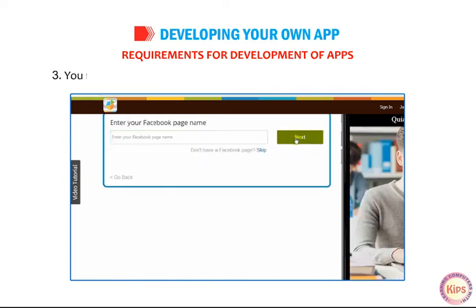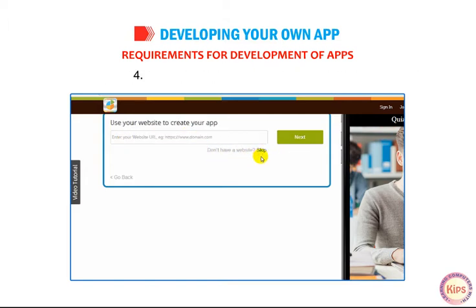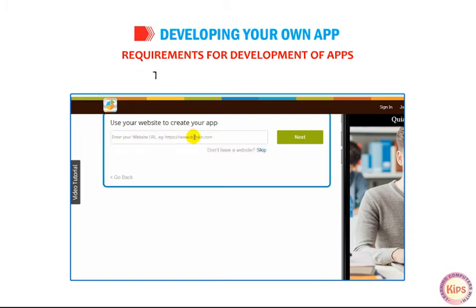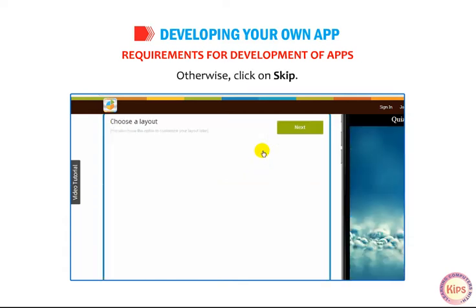You may choose to link your app to your Facebook page, or click on Skip. Linking to your website is also possible — type the URL in the box provided. Otherwise, click on Skip.